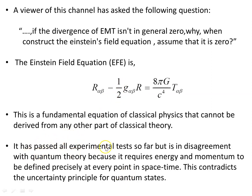The equation has passed all experimental tests so far, but it's in disagreement with quantum theory. The evidence supports Einstein's assertion that this is the correct equation to describe space-time, the matter and energy in it, and the curvature of space-time. It's in disagreement with quantum theory because it requires energy and momentum to be defined precisely at every point in space-time, which contradicts the uncertainty principle for quantum states where energy and momentum can't be precisely defined.